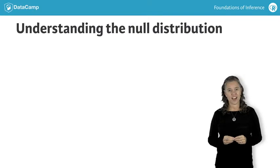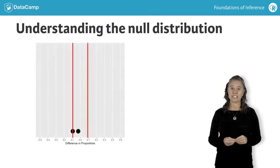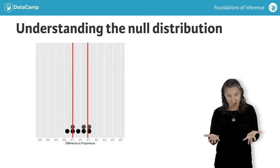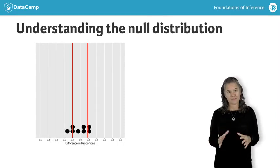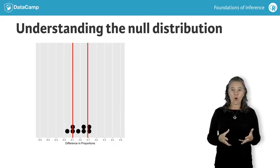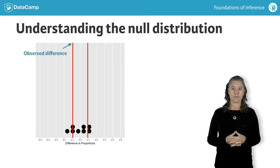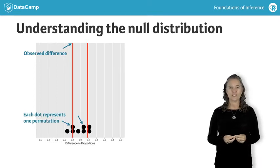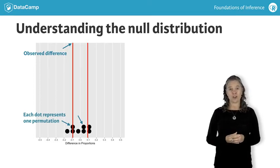Remember that each dot that gets generated is from a different permutation of the data. We use the null differences — the dots — to define the setting that we are not interested in. The goal is to show that our observed data are not consistent with the differences generated, so that we can claim the alternative research hypothesis to be true.